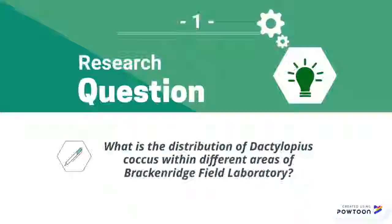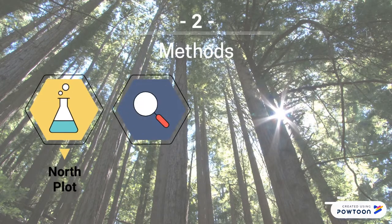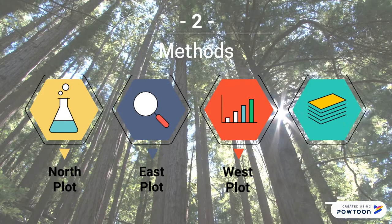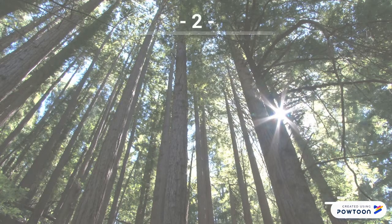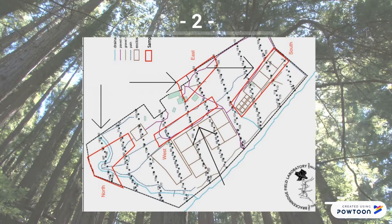To ensure that we cover all grounds of BFL, we have decided to break down our data into four subsections. The plots that we'll be covering are divided into the north, south, east, and west plots.